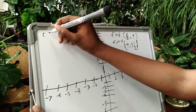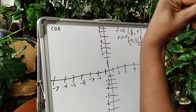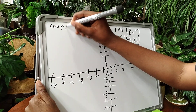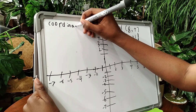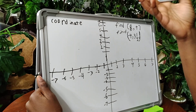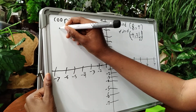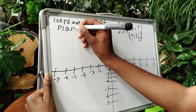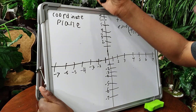It's called the coordinate plane. Let me make sure I'm spelling it right — coordinate. Yep, I'm spelling it right.